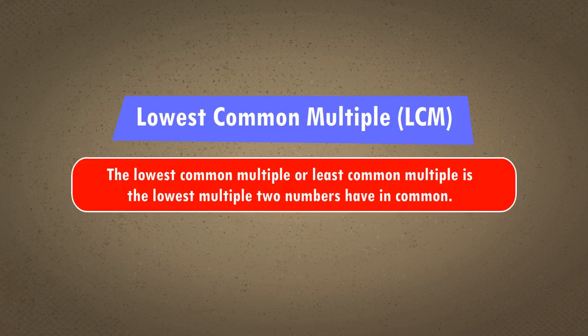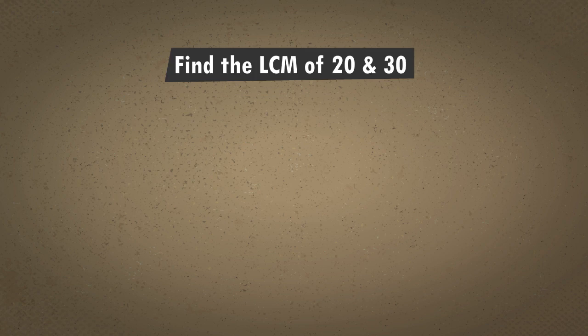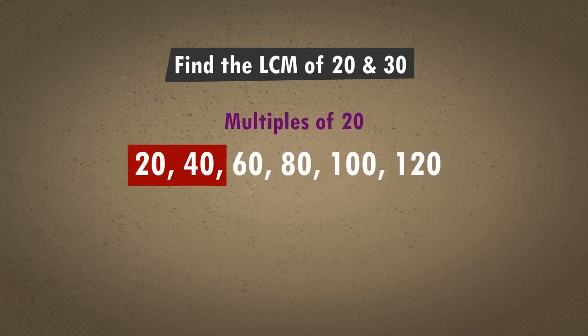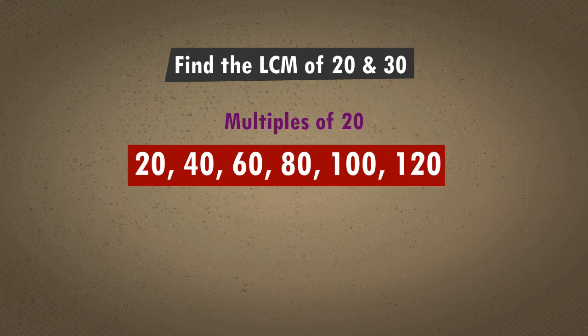The lowest common multiple or least common multiple is the lowest multiple two numbers have in common. Let us find the common multiples of 20. Multiples of 20 are 20, 40, 60, 80, 100, 120, and so on.